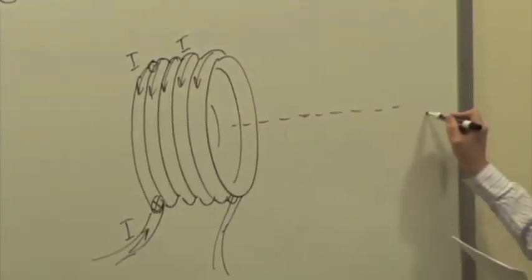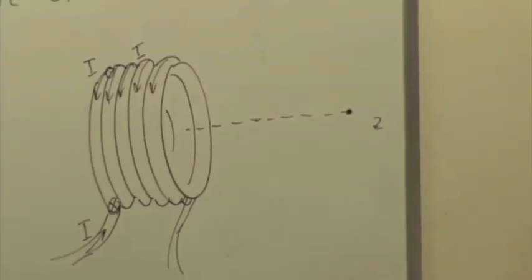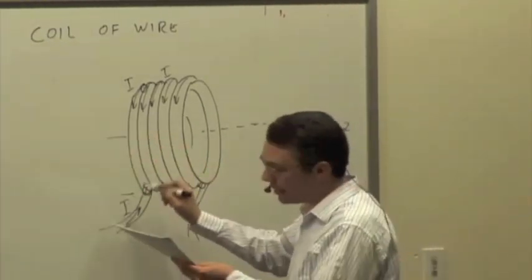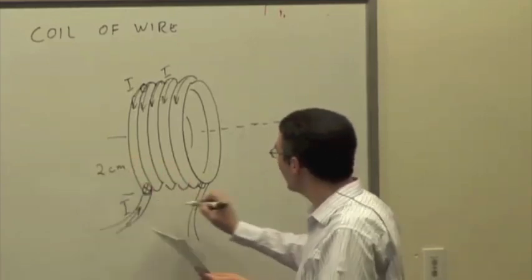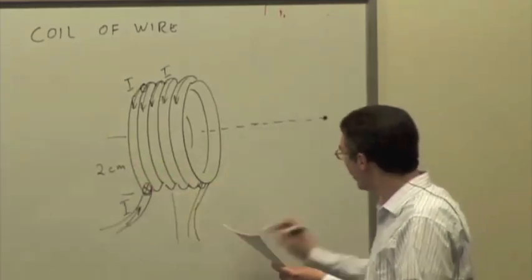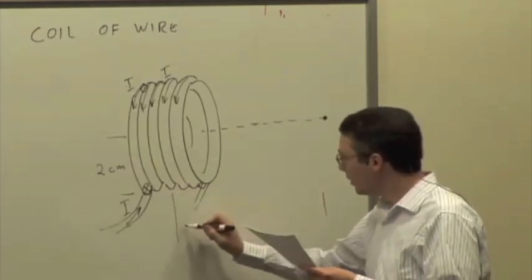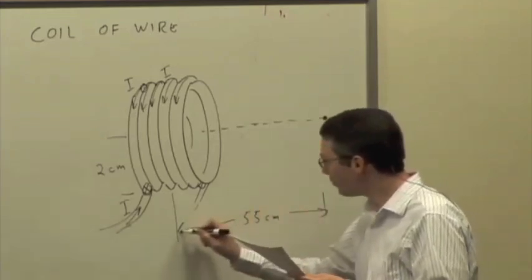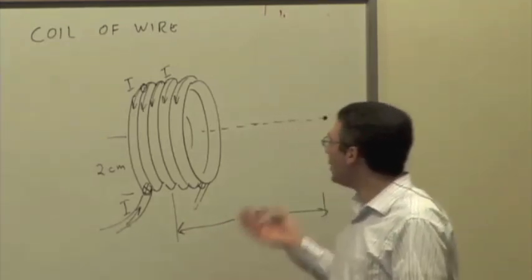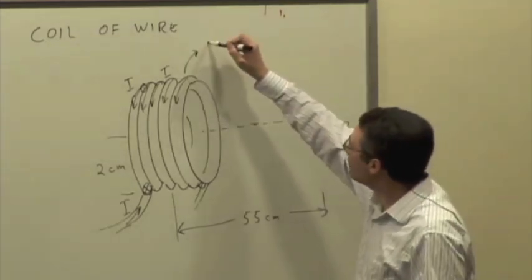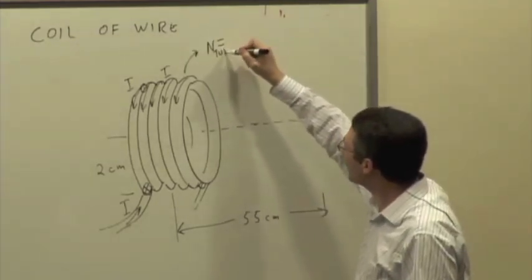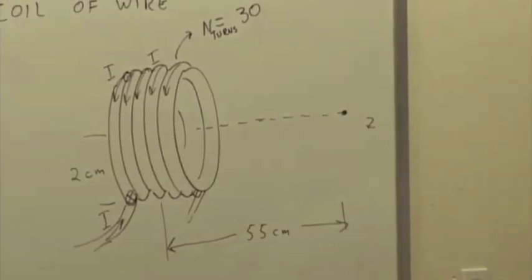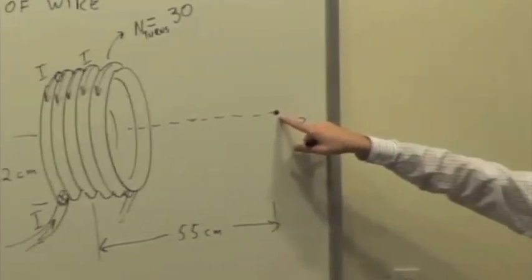Here's our z-axis again, and we want to find magnetic field at some location out here. Just to make it more concrete, the radius is something like 2 centimeters, and the distance from the center of the coil to the observation location is, say, 55 centimeters. Let's say the number of turns is 30. We want to find the net magnetic field here. What do we do?